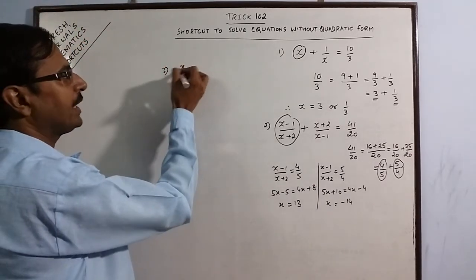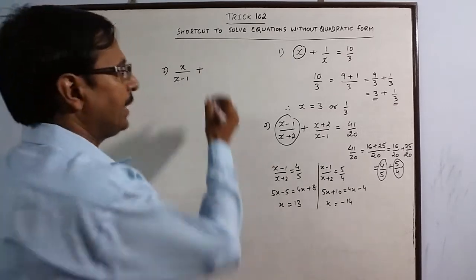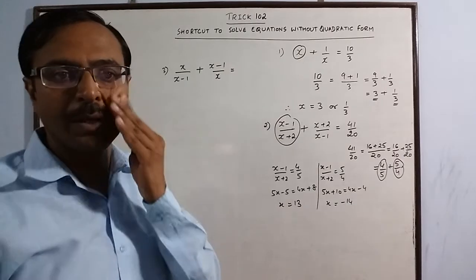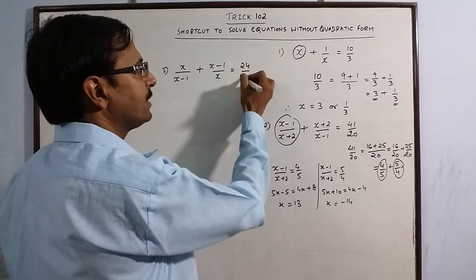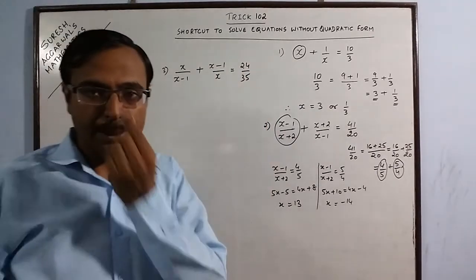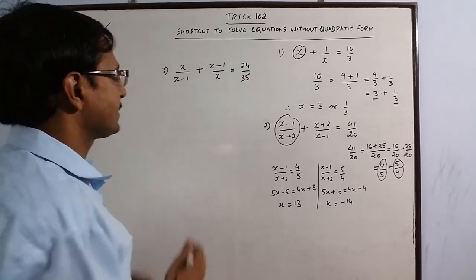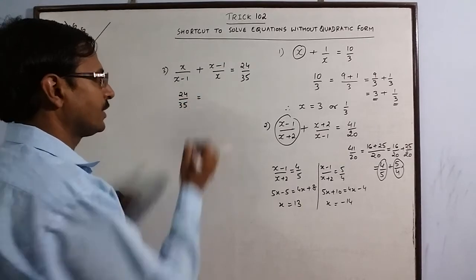Say, we have x upon x minus 1 as the first term and obviously the reciprocal x minus 1 upon x as the second term. Now, here you have 24 upon 35 as the RHS. Now, I want to see whether I can write 24 as the sum of two numbers which are perfect squares or not.